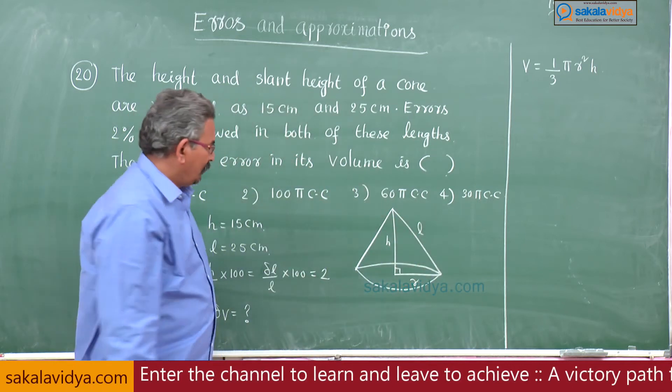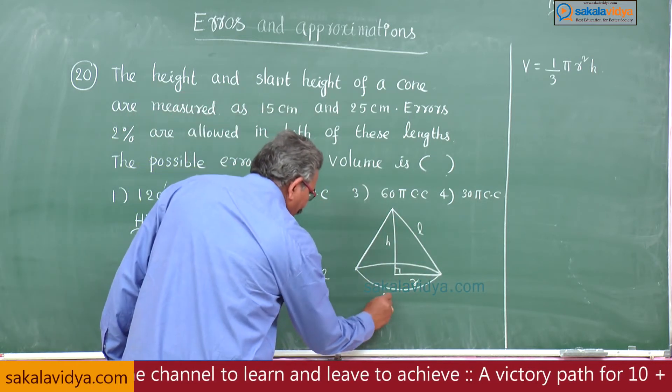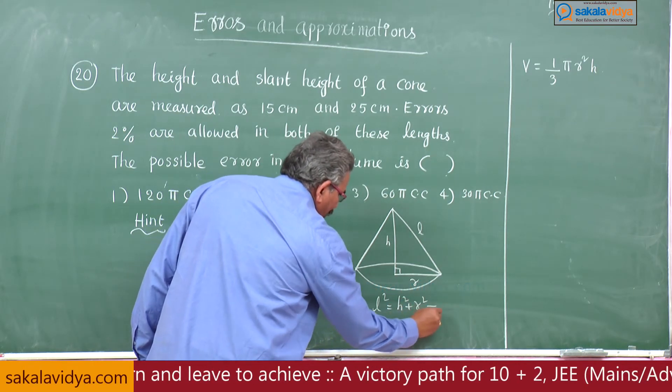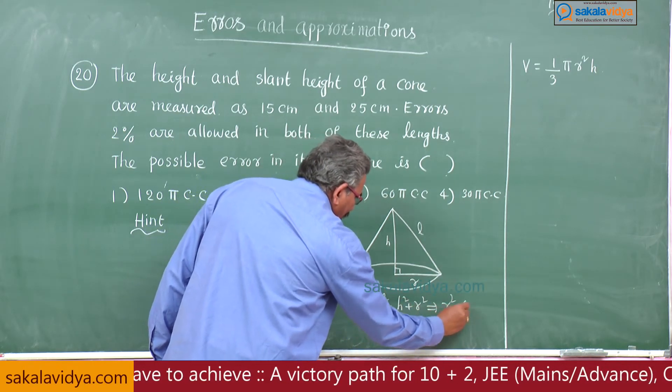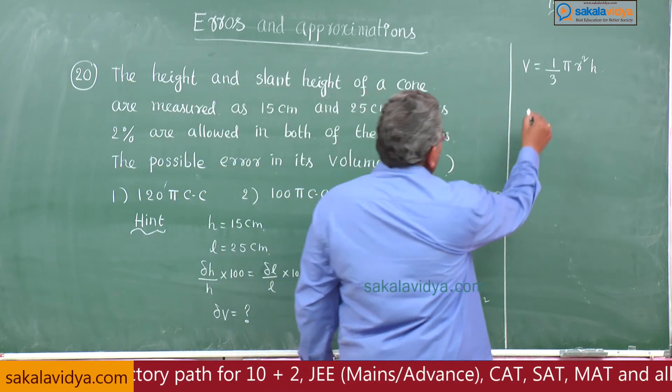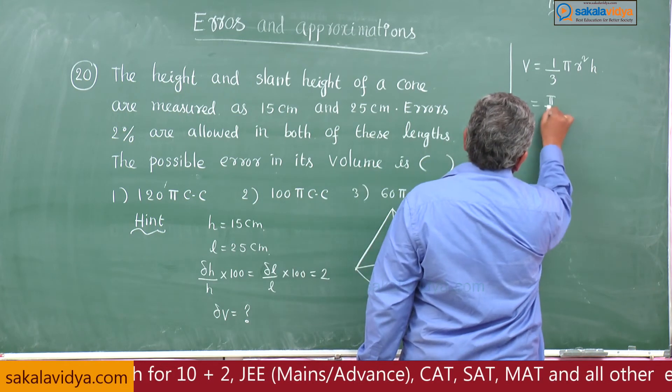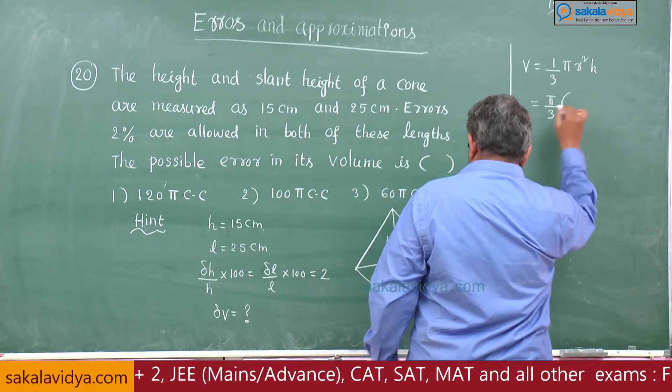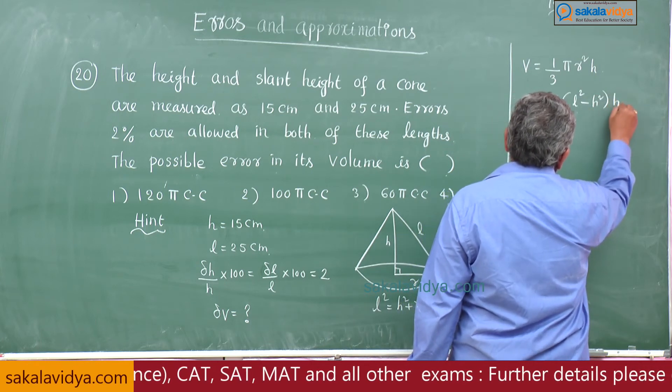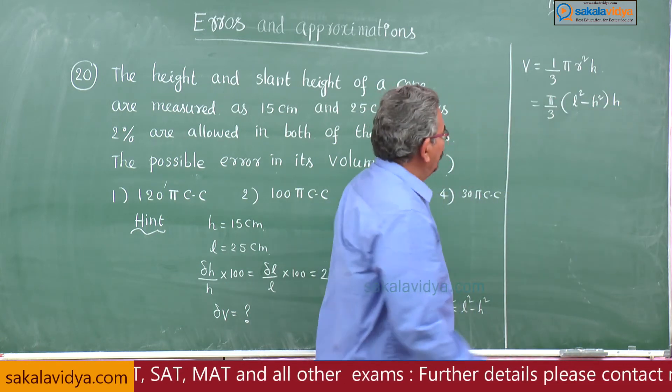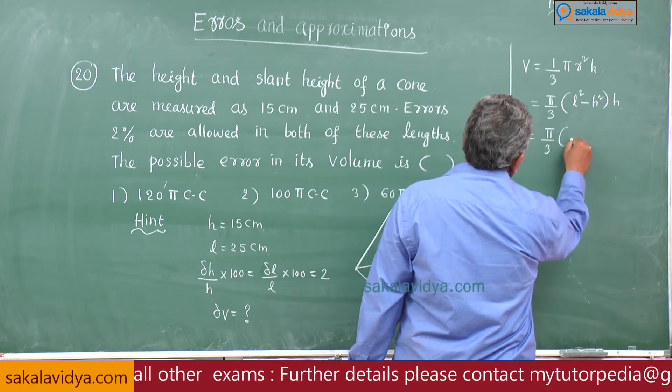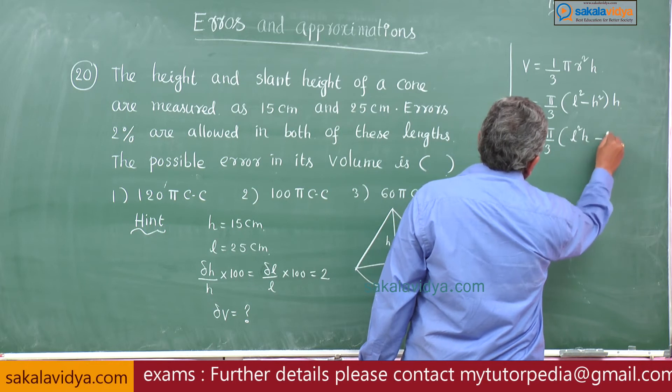What is the relation we have? l square equals h square plus r square. So what is r square? l square minus h square, just replace there. So this can be written π by 3 into r square means l square minus h square into h.